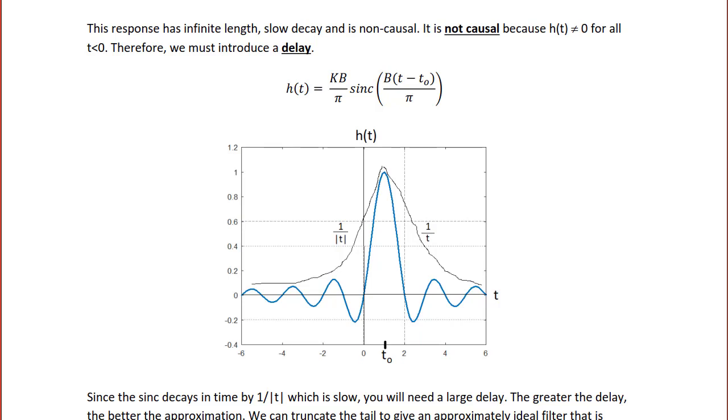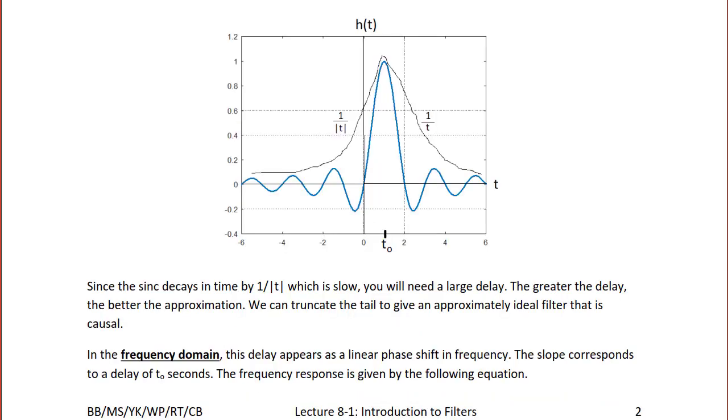So one thing we can do to try to account for the non-causality is to introduce a delay. H of T equals Kb over pi sinc of B times T minus T0 over pi, which is shown in the following figure. So notice that it still has a slow decay time, but it now starts at T0 instead of at zero. So in theory, depending upon the delay, you could now say it approximates a causal system. Since the sinc decays in time by 1 over T, which is slow, you will need a large delay. The greater the delay, the better the approximation. We can truncate the tail to give an approximation ideal filter that is causal, and we can truncate at the positive end in order to solve the problem of the infinite length.